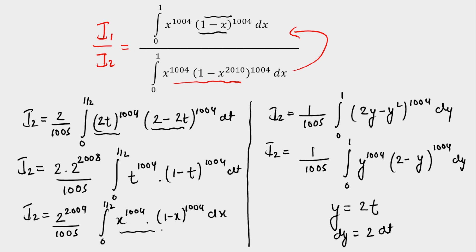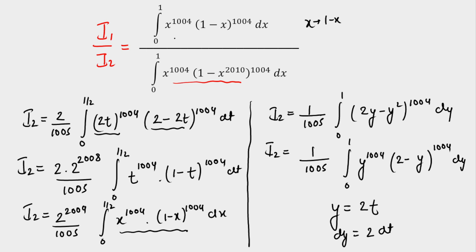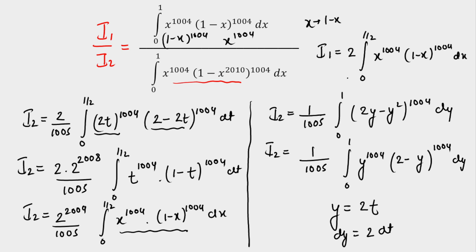As you can see, I have successfully expressed i2 in terms of something close to i1, because i1 contains x to the power 1004 times (1 minus x) to the power 1004 — these two terms match. The one problem is that i1 has limits 0 to 1, while here we have 0 to 1/2. To fix this, I note that in i1, if I replace x by (1 minus x), the integral value stays the same because it's a symmetric term — (1 minus x) to the 1004 and x to the 1004 just swap. Using this symmetry (King's property), i1 can be written as 2 times the integral from 0 to 1/2 of x to the power 1004 times (1 minus x) to the power 1004 dx.